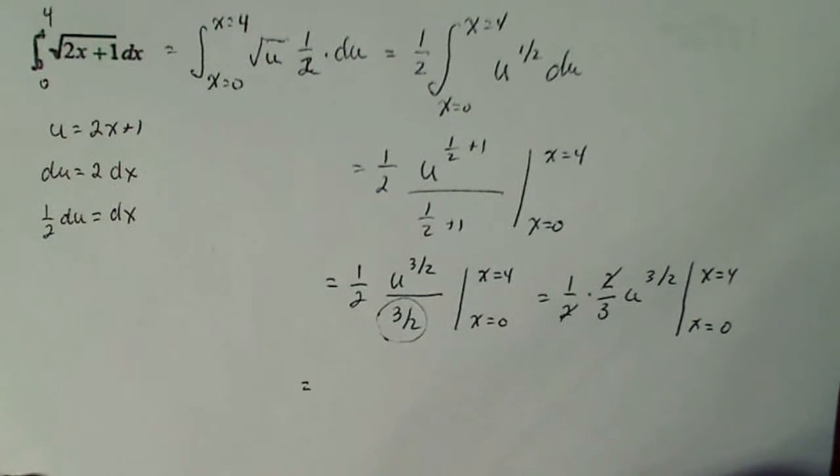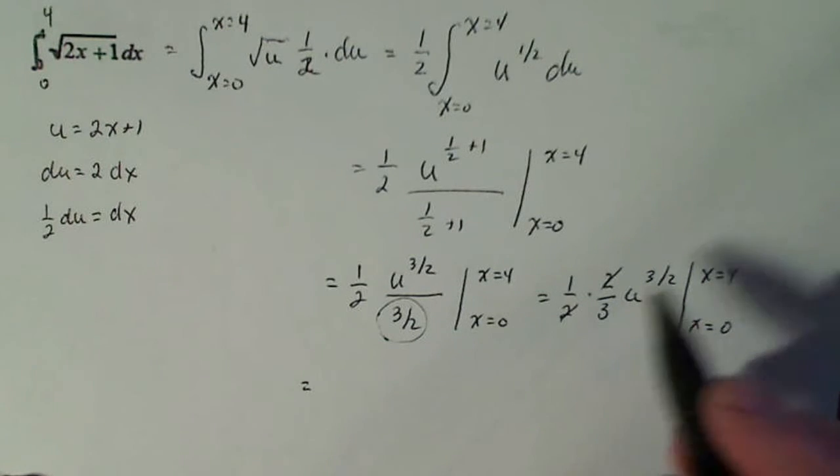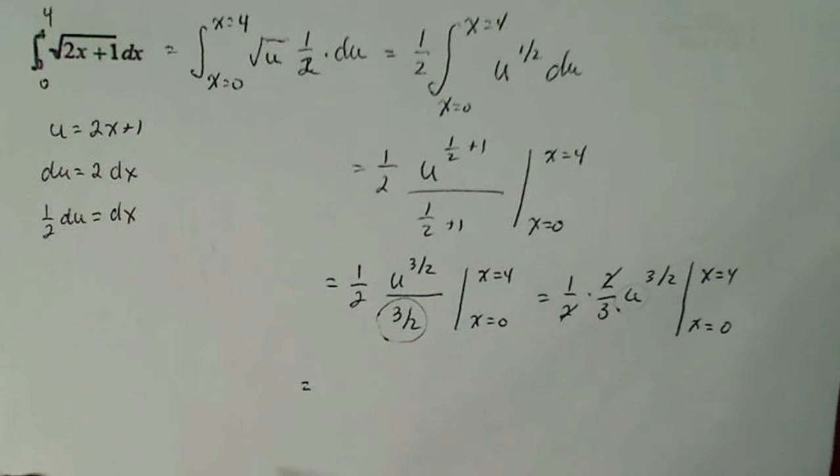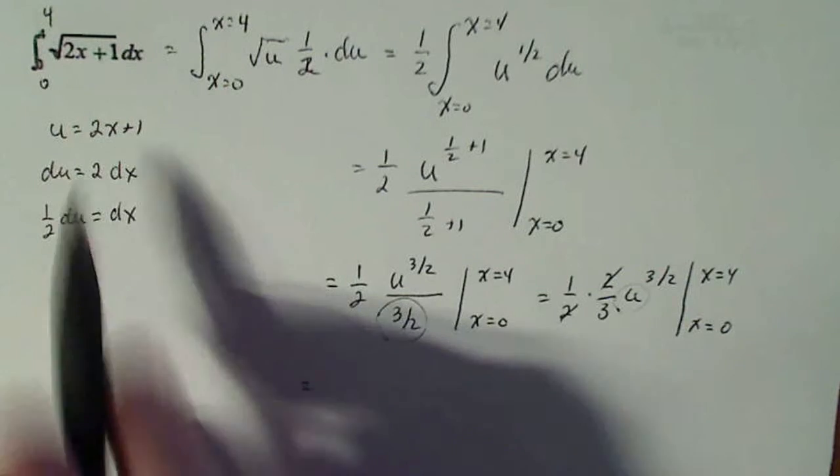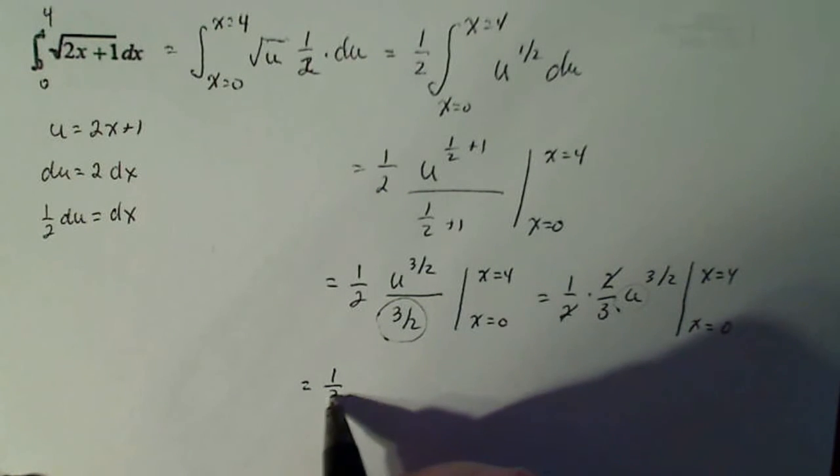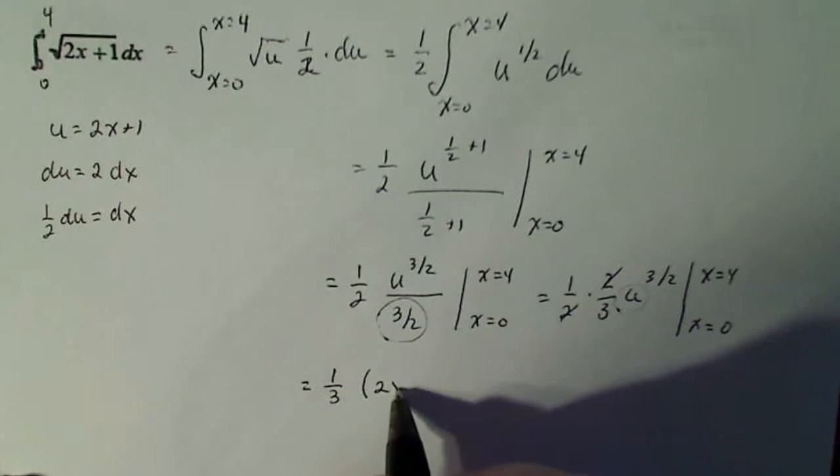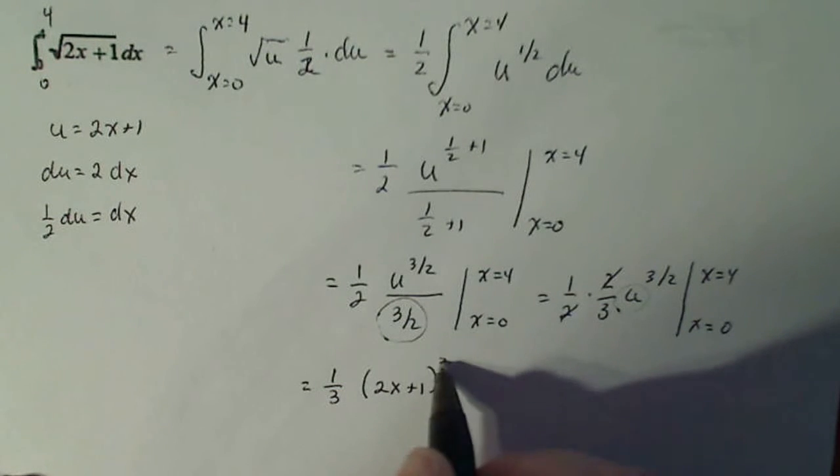Those twos can cancel and I'm gonna substitute back in for the u what originally u was. So I have one third times 2x plus 1 to the three halves.